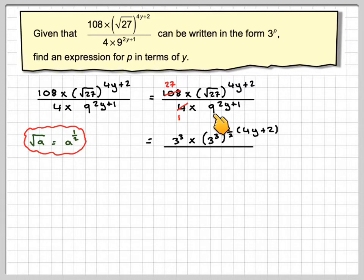Also, 9 is 3 squared, so rewriting 9 as 3 squared, and that's still to the power of 2y plus 1.